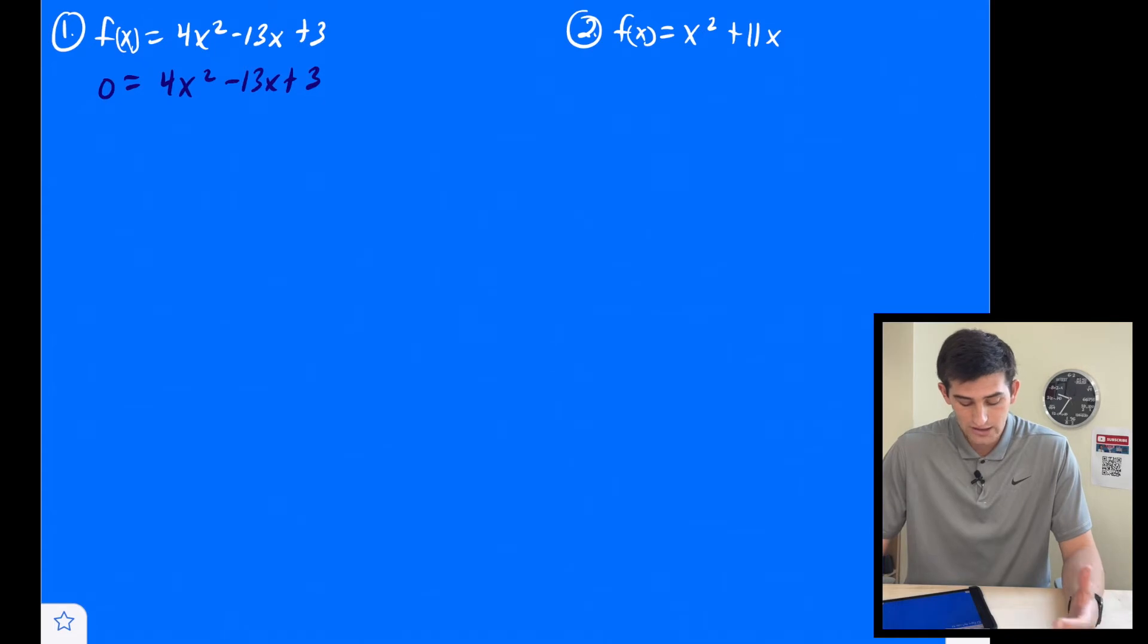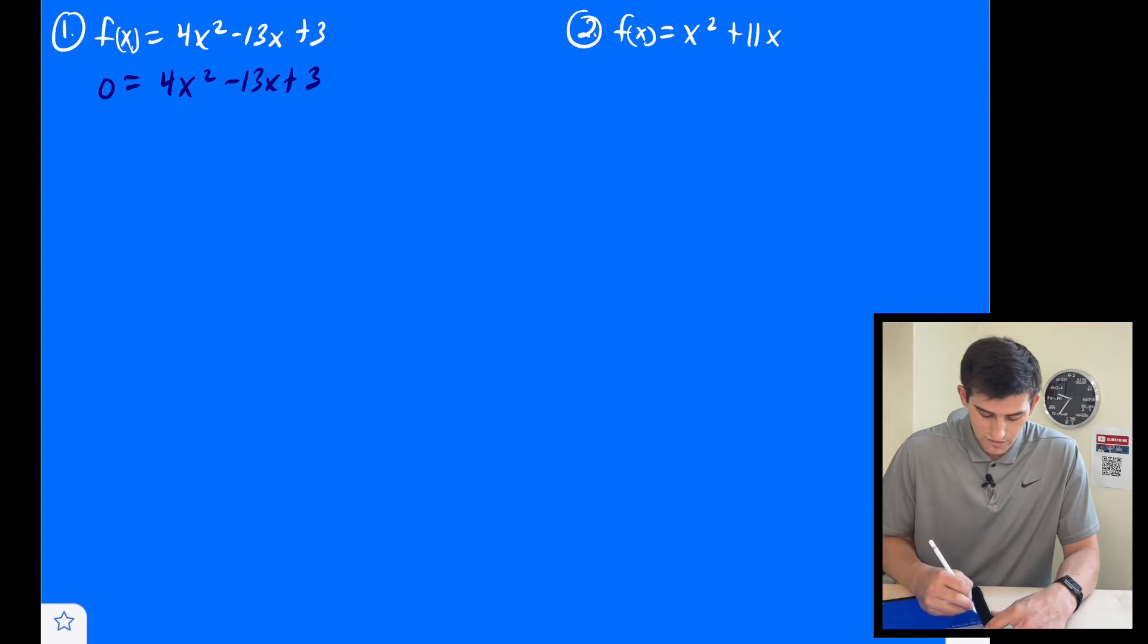So we could think, okay, can we factor out this 4? Well, we can't because 13 and 3, 4 is not a factor. So there's a bunch of methods that you can use to factor a quadratic when a is not 1. Here's the one that I use. So I draw myself a little x right here. And I write a times c and b.